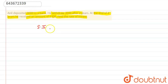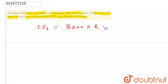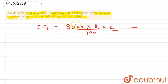SI on 8000: SI1 equals P which is 8000 — that is the principal amount. The rate of interest is unknown, so suppose that is r. Into time: time is given as two years. So we write 8000 × r × 2 / 100. This is SI1, the simple interest on 8000 for two years. Suppose this is equation one.